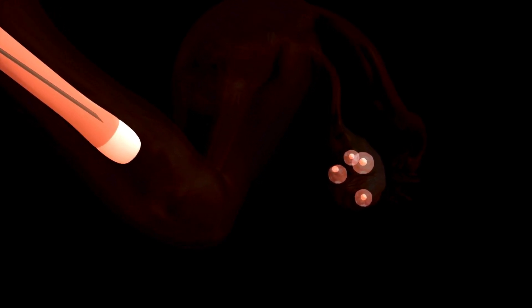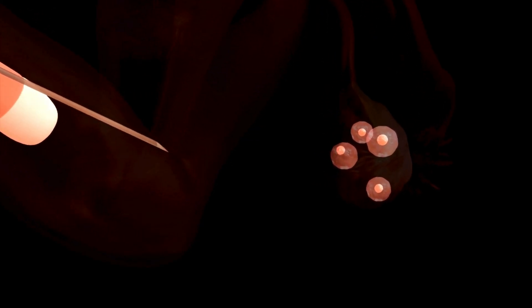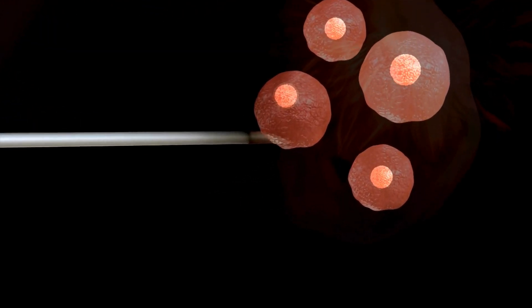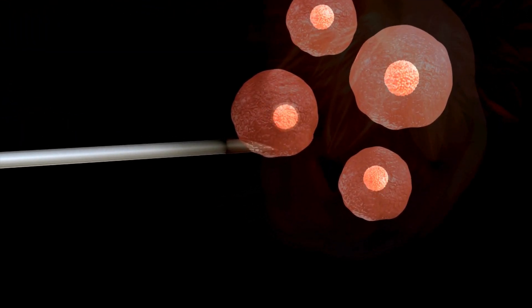The needle is used to aspirate, suction out, the fluid from the follicles, which contains the eggs. This fluid is then passed to the laboratory for identification and isolation of the eggs.